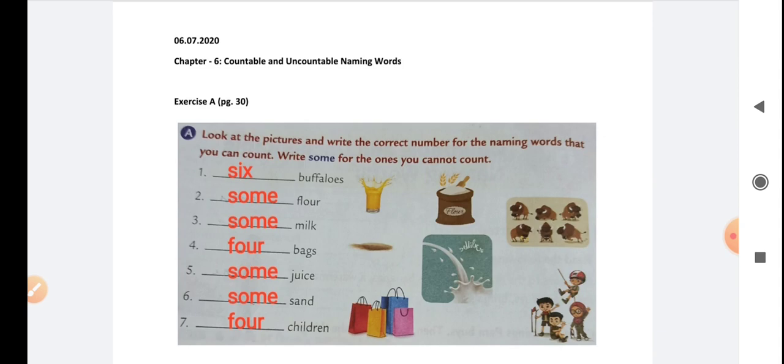Number six: dash sand. Can we count the sand? No, it is uncountable naming word. Number seven: dash children.